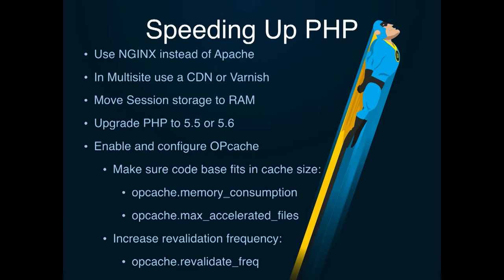Part of increasing PHP speed is working on the architecture directly. Using Nginx is highly recommended — I haven't used Apache for five years. Apache has to load PHP for every single page load, even for loading CSS and JavaScript. Nginx only passes your dynamic requests over to PHP, which gives you a lot of headroom. If you're running multi-site, make sure you're using a CDN or Varnish cache in front of your media files, because your uploads are actually rewritten through PHP in multi-site — keeping those requests from hitting PHP gives you a lot of headroom. Also make sure you're using the latest versions of PHP — going from an older 5.2 to 5.5 or 5.6 can get you 10 to 20% more speed. And if you're not using the op cache, you're crazy — it's built into PHP, you just have to enable it, and it will speed up your requests by at least two times. There are a few rules for how you can optimize the op cache further too.